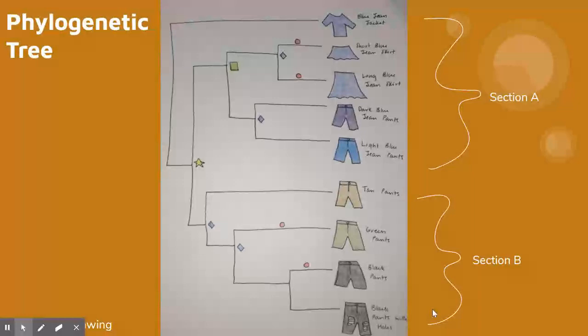This allows the tree to be rooted at the yellow star node because this node represents the common ancestor of all of the blue jean articles of clothing and colored articles of clothing. The green square node represents the most recent common ancestor between the blue jean pants and the blue jean skirts.